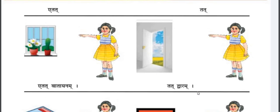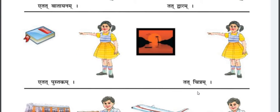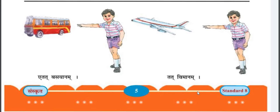Now third is Etat and Tat. Both pronouns show Neutral Gender, means Napunsak Ling. Etat means 'this,' Tat means 'that.' Both are related with Neutral Gender and also Non-Living Things. Etat Vatayanam — this is a Window. Etat Dwaram — that is a Door. Etat Pustakam — this is a Book. Etat Chitram — that is a Picture. Etat Vimanam — that is an Aeroplane.